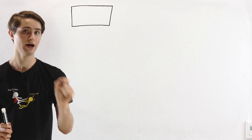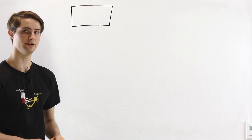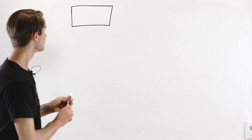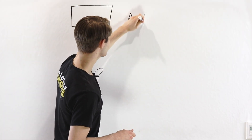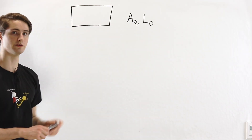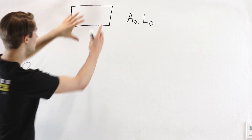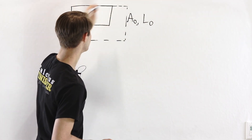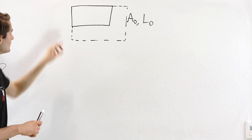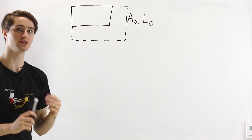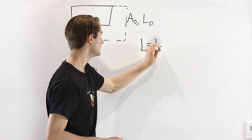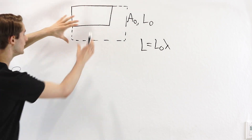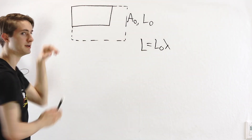In order to understand how this works, we first have to think about scaling up a shape. Let's consider a rectangle with some particular area A0 and perimeter L0. Now let's say we take this entire shape and scale it up by some factor lambda, making a bigger rectangle. That means all of the side lengths are going to become lambda times longer.